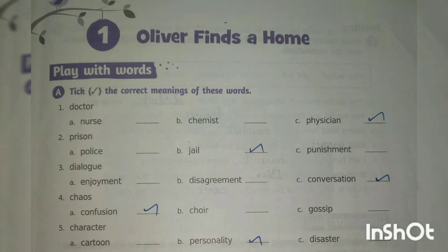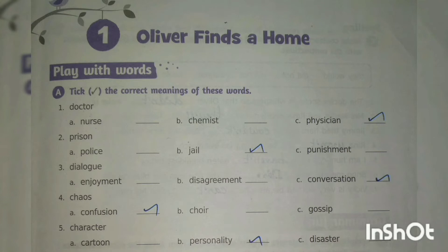You can see 5 questions there. Look at the first one. The word given is 'doctor' and 3 options are given: option A, nurse; option B, chemist; option C, physician. You have to find which is the correct meaning of the word 'doctor'. The answer is option C, physician. Physician means doctor, so the answer is physician.